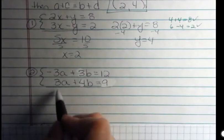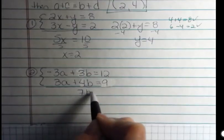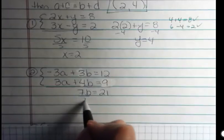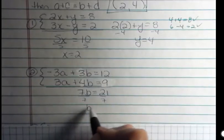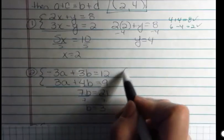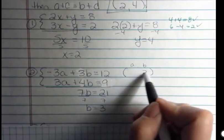Negative 3a and positive 3a are gone. 3b and 4b is 7b, and 12 plus 9 is 21. Now I'm going to divide both sides by 7, and I'm going to get b equals 3. This is a and b, so my ordered pair is alphabetical a and then b. So I have the b is 3.